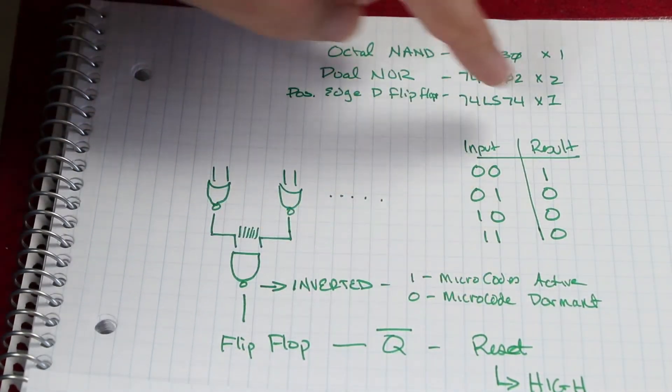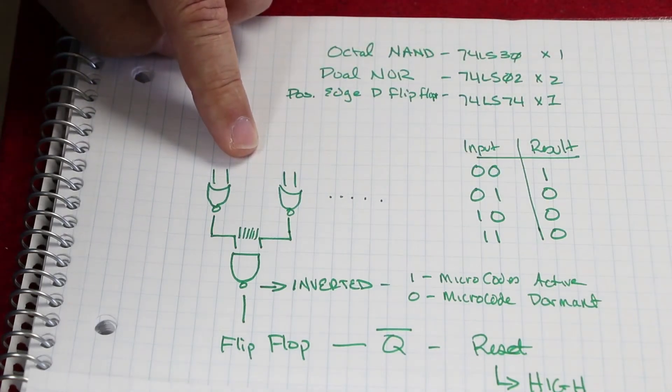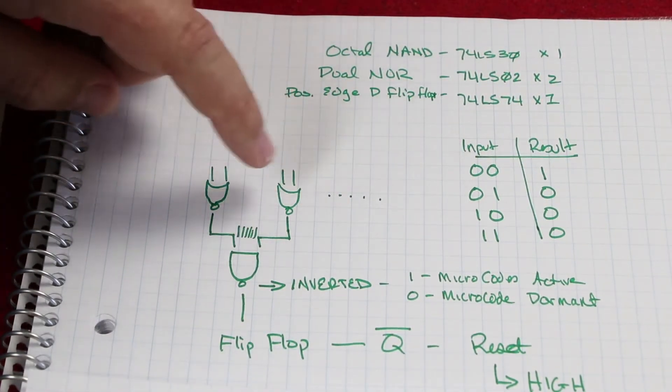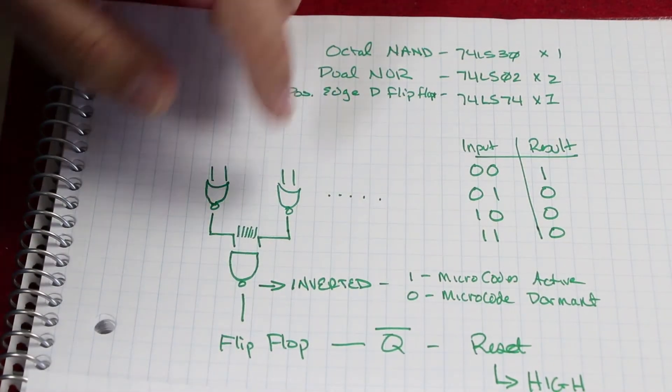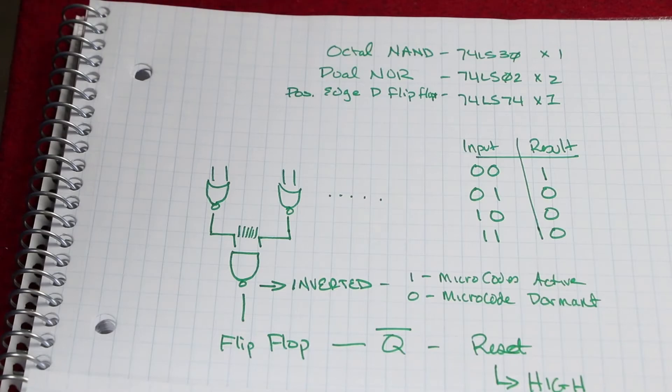So mission accomplished with a lot of wire bending and four chips: two NORs, one NAND, one flip-flop. I now have a signal coming out that can reset my microcode and improve the efficiency of my computer.